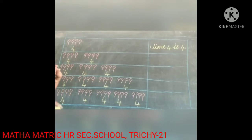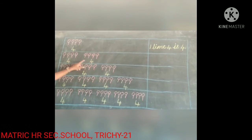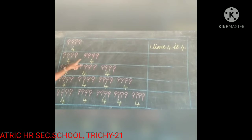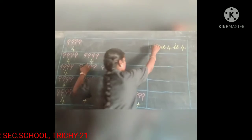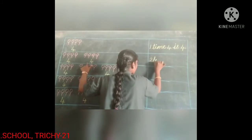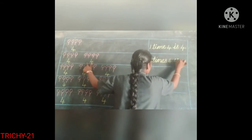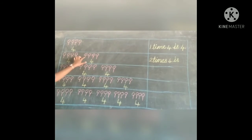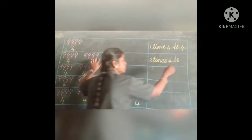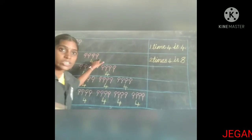Now look at the second box. How many times did 4 come? 1, 2 — two times. So write it: 2 times 4 is... Count all the lollipops in the second box: 1, 2, 3, 4, 5, 6, 7, 8. So here we have to write 8. Two times 4 is 8.